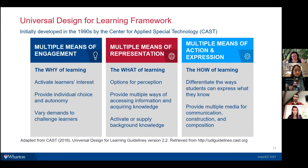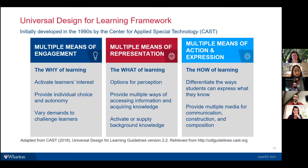The third part of the UDL framework is multiple means of action and expression — this is the 'how' of learning. What are students doing? How are they navigating the course both in physical space and in virtual course elements like the LMS? We can differentiate the ways that students express themselves and demonstrate that they've acquired the material. No single means of action or expression will work best for everyone, so providing multiple opportunities and, where possible, allowing students some choice in how they proceed works best.